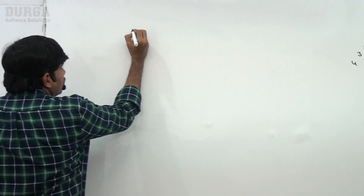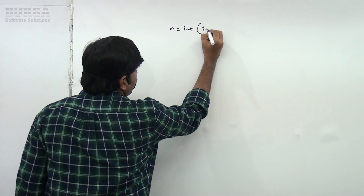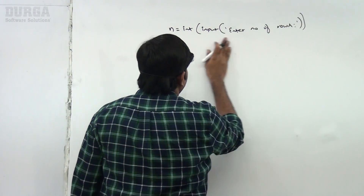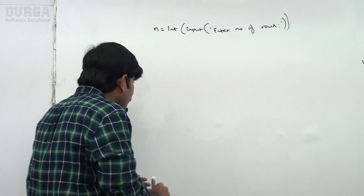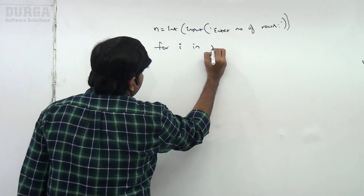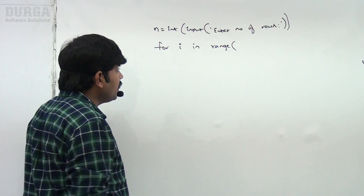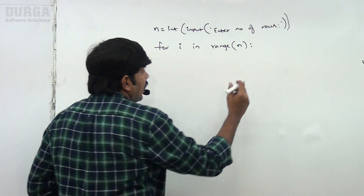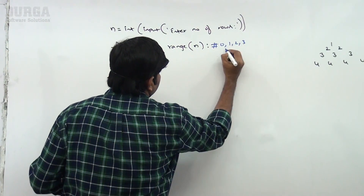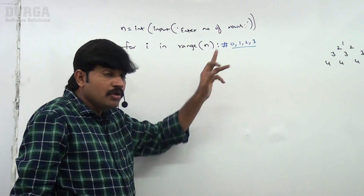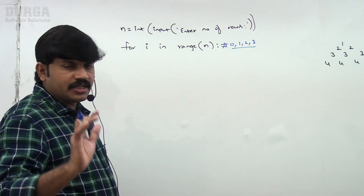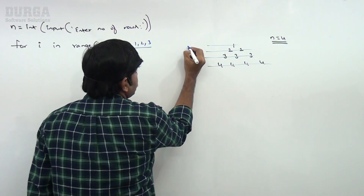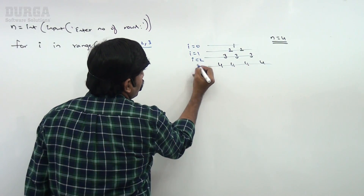Now observe carefully. We take n = int(input('Enter number of rows')). Then, for i in range(n). If n is equal to 4, the possible values of i are 0, 1, 2, 3. Row 1 corresponds to i=0, row 2 to i=1, row 3 to i=2, row 4 to i=3.